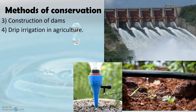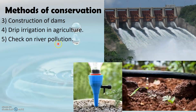The drip irrigation system, as you see here, helps in saving a lot of water. This is done by allowing water to drip slowly to the roots of the plants. This can be done either from above the surface of the soil or buried below the soil surface. By doing so, water directly reaches the root of the plant and helps in minimizing loss of water due to evaporation. Another way to conserve water is to check on pollution of rivers and other water bodies.